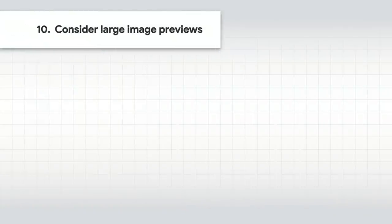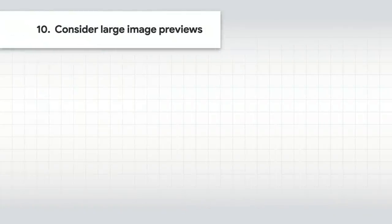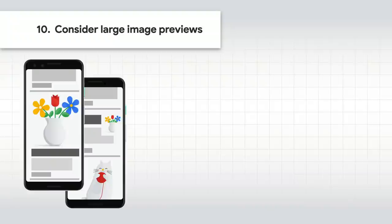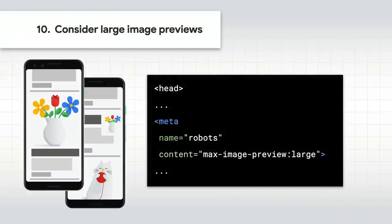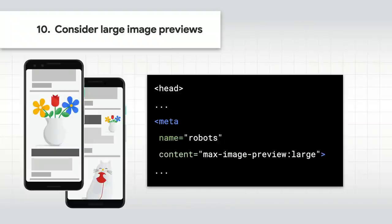Consider allowing large image previews. Including compelling, high-quality images in your content is more likely to generate visits from Discover. For large image previews, the images need to be appropriately sized and the feature needs to be enabled either with the maxImagePreviewLarge robots meta tag or by using AMP.